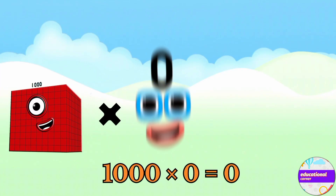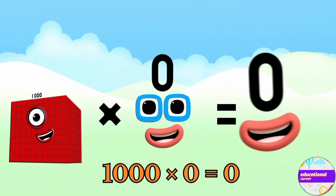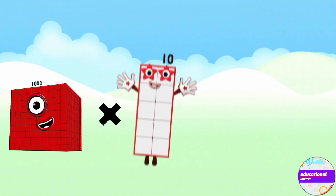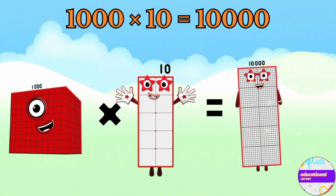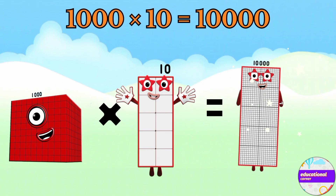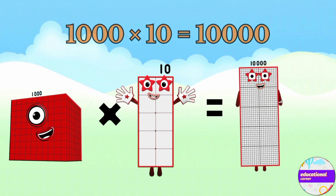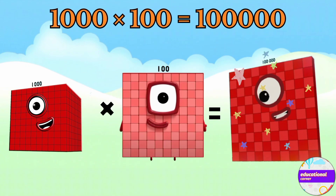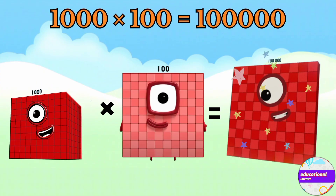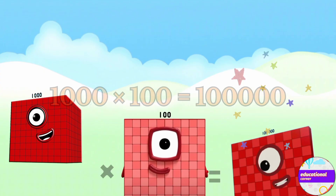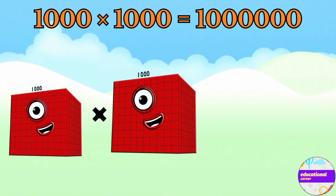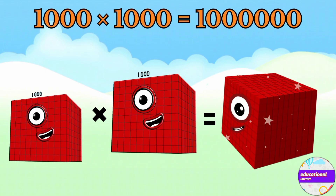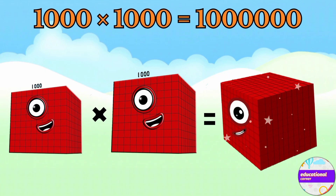One thousand multiply by zero equals zero. One thousand multiply by ten equals ten thousand. One thousand multiply by hundred equals one hundred thousand. One thousand multiply by thousand equals one million.